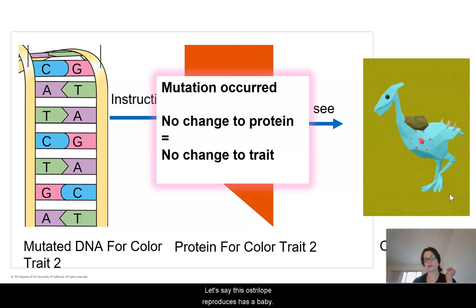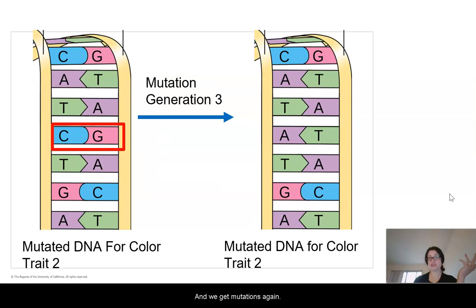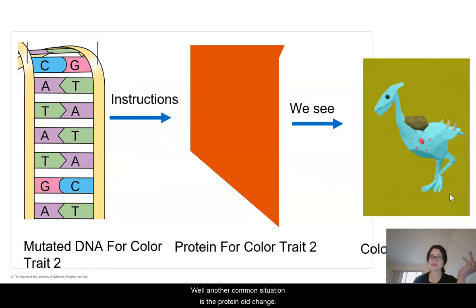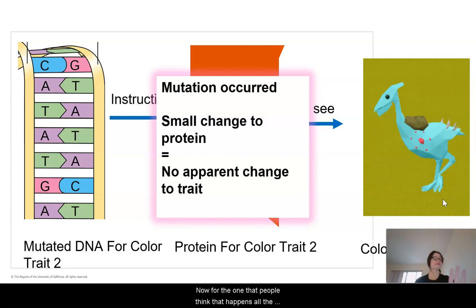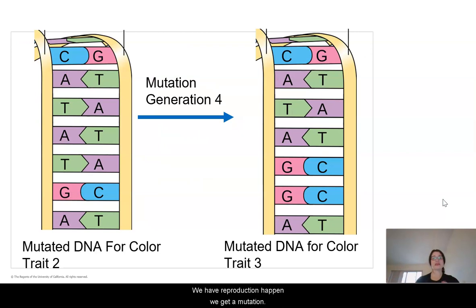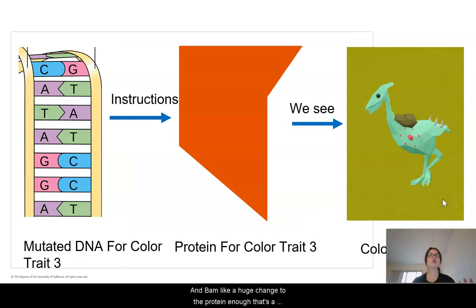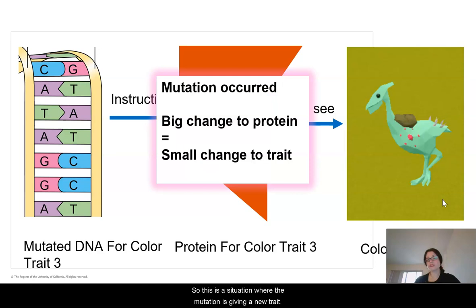Let's say this ostrilope reproduces and has a baby, and we get mutations again. Another common situation is the protein did change, but in such a small way that the trait either didn't change, or the change is so tiny you can't even notice it. Now, for the one that people think happens all the time, but it's only occasionally — we have reproduction happen, we get a mutation, and bam, there's a huge change to the protein, enough that the trait you end up seeing is different from before, at least somewhat different. So this is a situation where the mutation is giving a new trait.